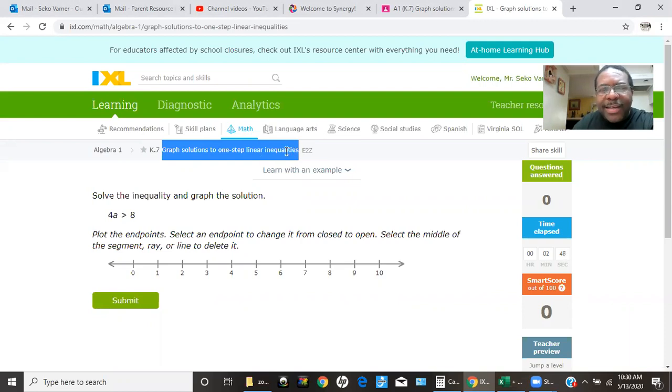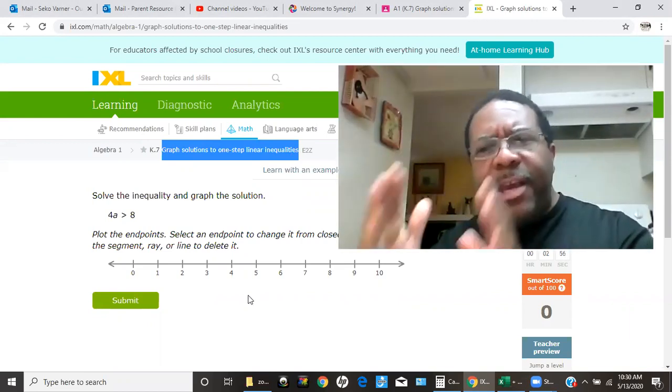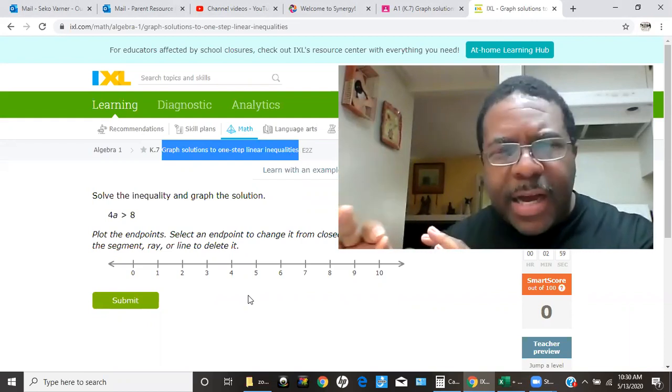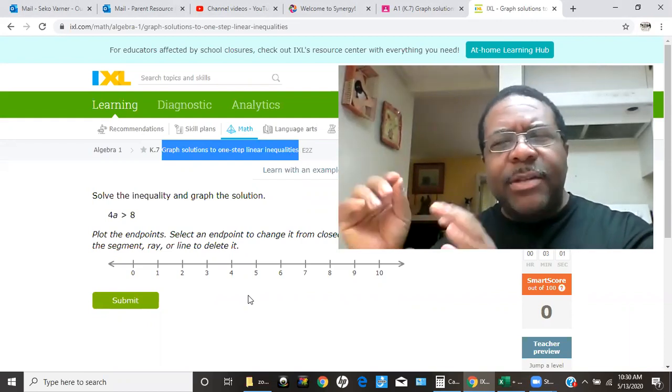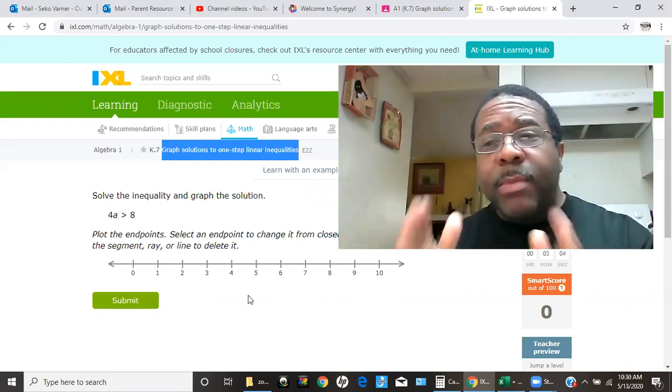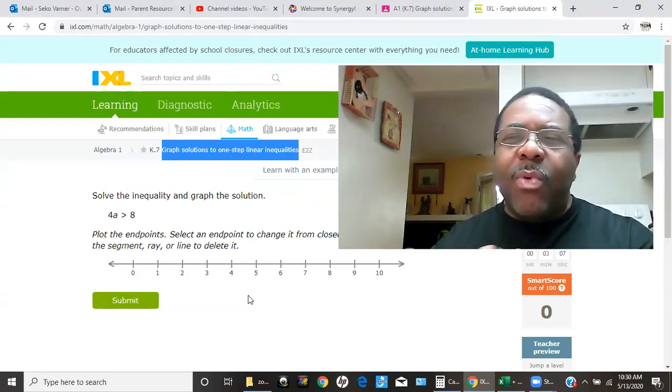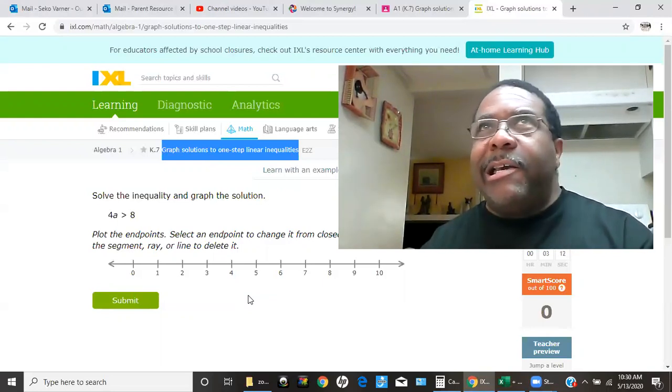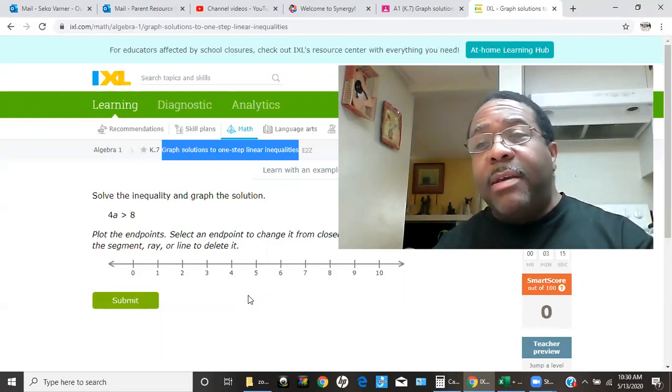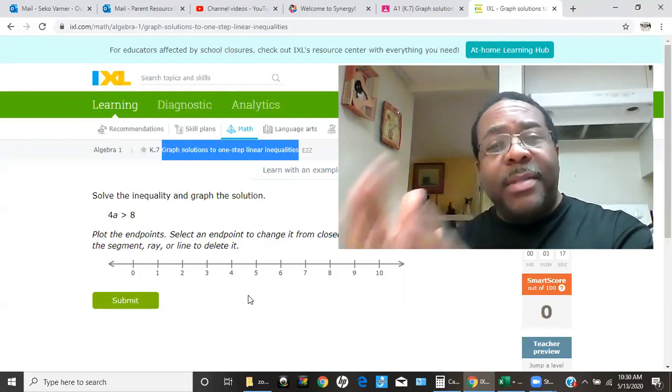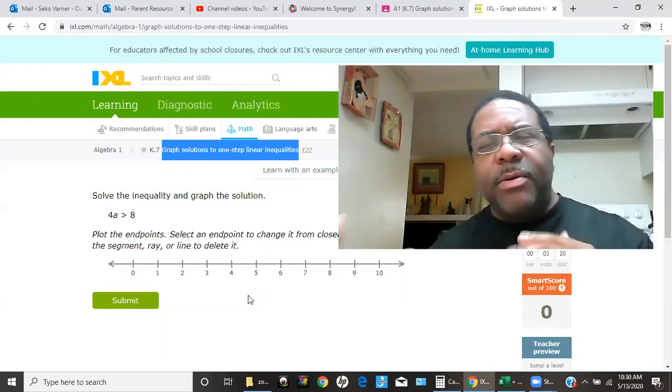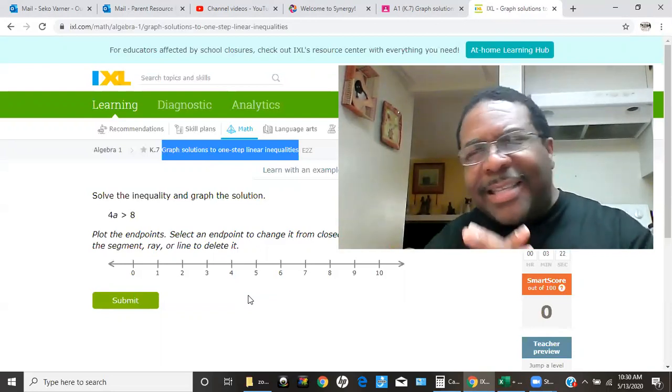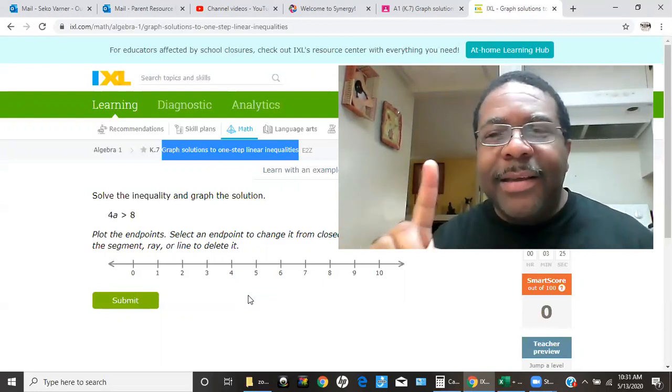Remember, an inequality means a whole bunch of numbers. An equality would be one number. One plus one equals two. It's only two, not 2.5, not 1.9, not 2.55. It's two. But an inequality could be X is greater than five. So it could be 5.1, it could be six, seven, eight, 15 billion. An inequality has a lot of numbers and equality has one.